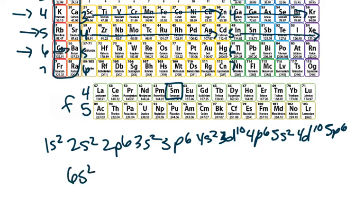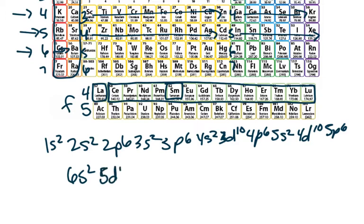And then we hit 57. So 57 is actually this guy right here, and he's technically part of the Ds. So these are all part of the Fs right here. Okay, so that would give me 5D1, right, to account for lanthanum.